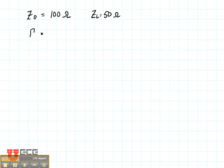In that case, the reflection coefficient is going to be ZL minus Z naught over ZL plus Z naught, of course. So that's going to be 50 minus 100 divided by 50 plus 100 or minus one third.